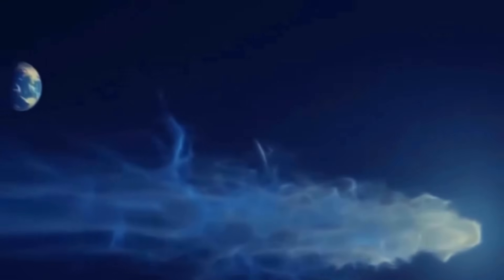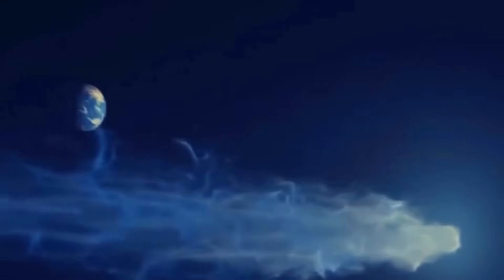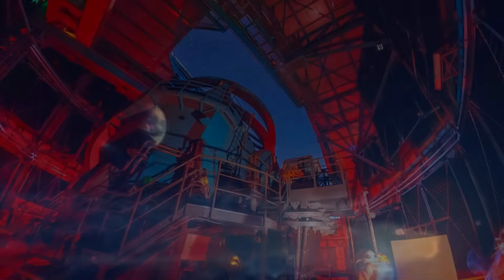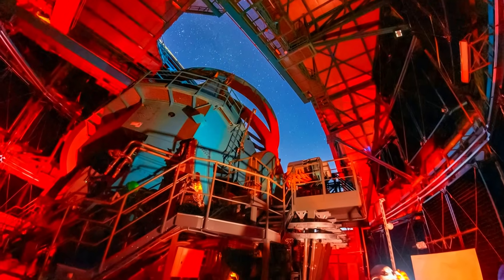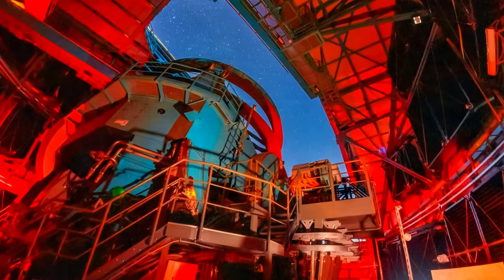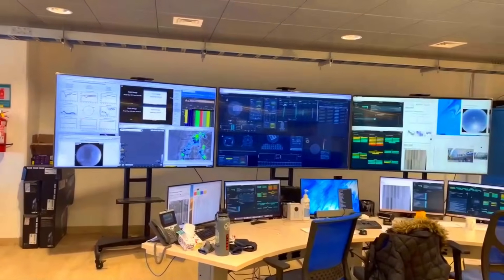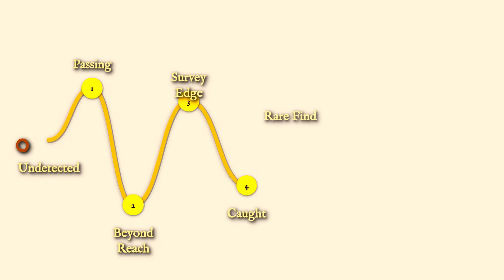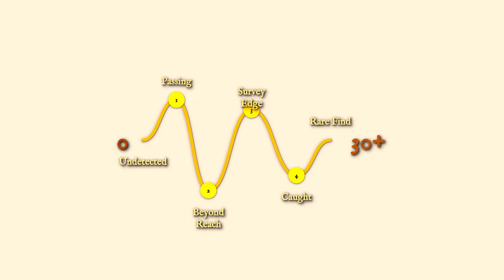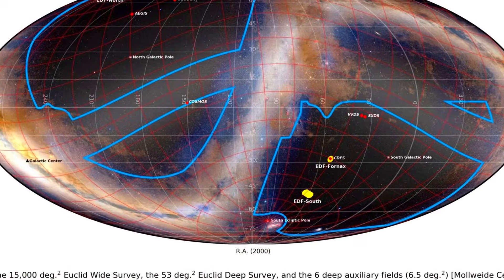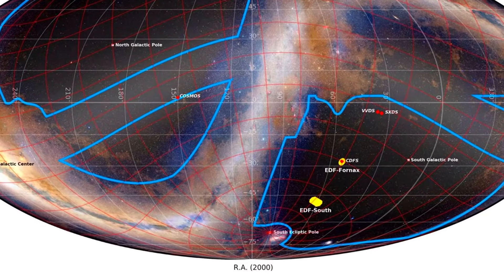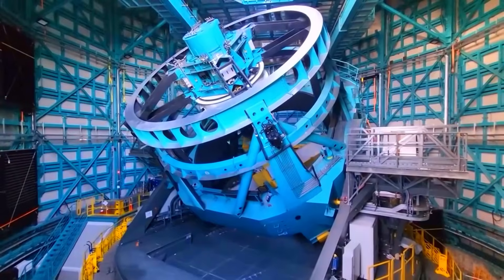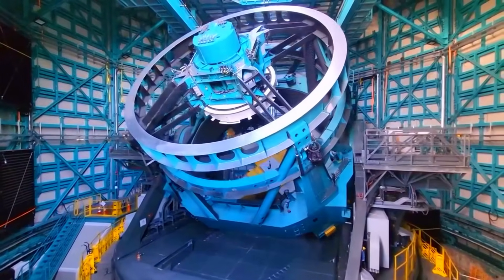Yet, even with this size advantage and a coma stretching hundreds of thousands of kilometers, 3I Atlas barely made it into our telescopes before perihelion. Simulations from the Rubin science team suggest dozens of similar objects could pass through the inner solar system each decade, most slipping by unnoticed. The odds of detection depend on both size and survey coverage, which is why astronomers are eager for Rubin's full operations to begin.